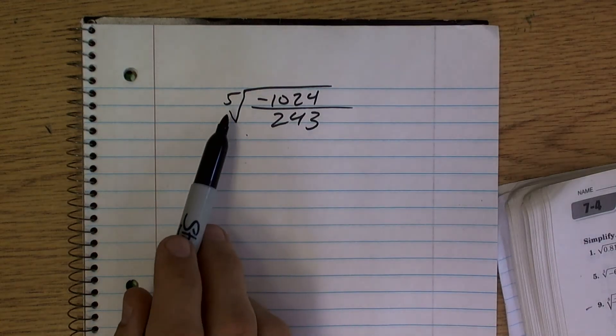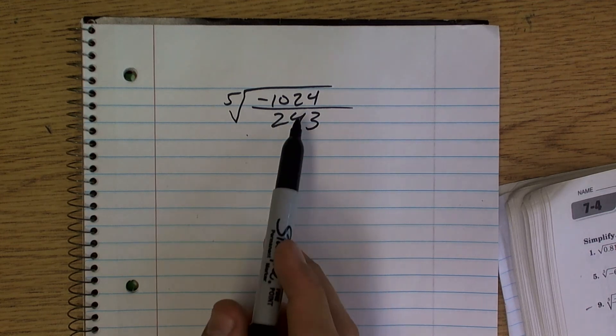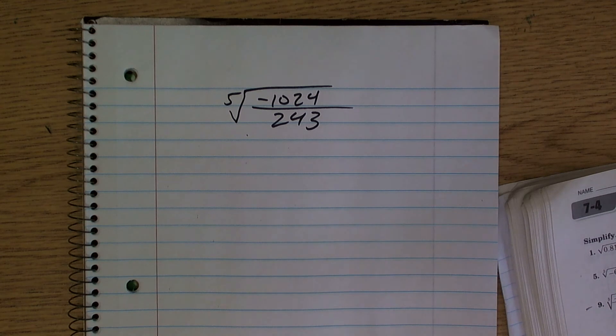Whenever we're dealing with an odd root of a number, we can have a negative. You can take the negative, because a lot of people remember you can't take the square root of a negative number.